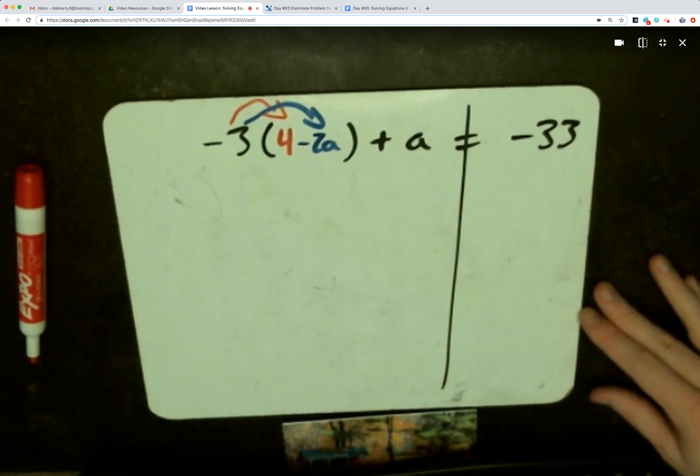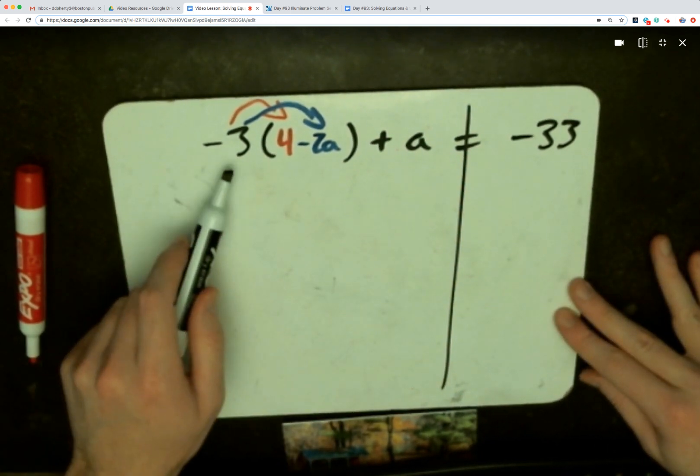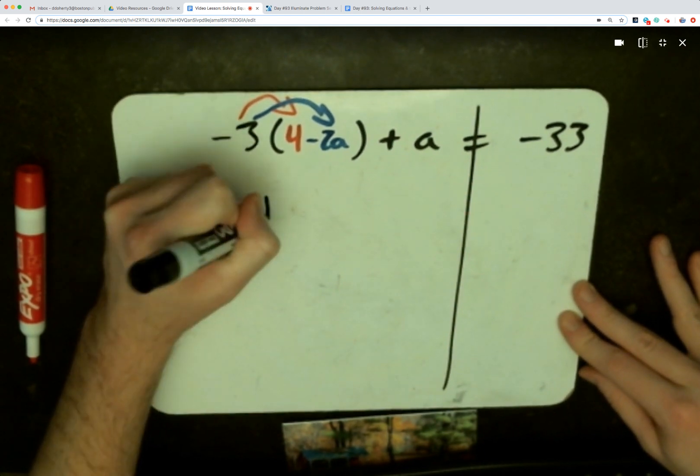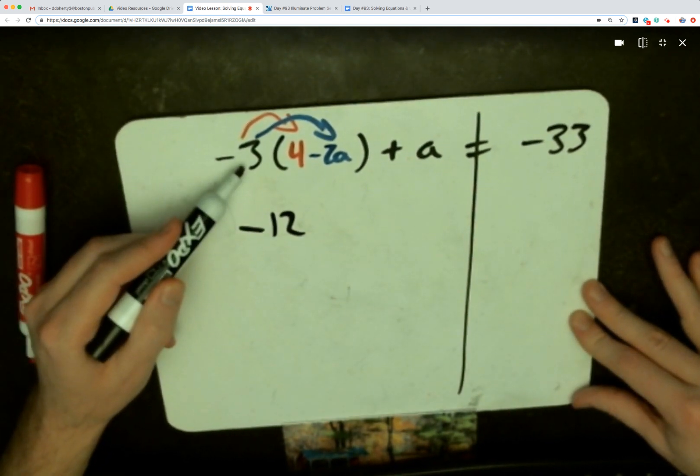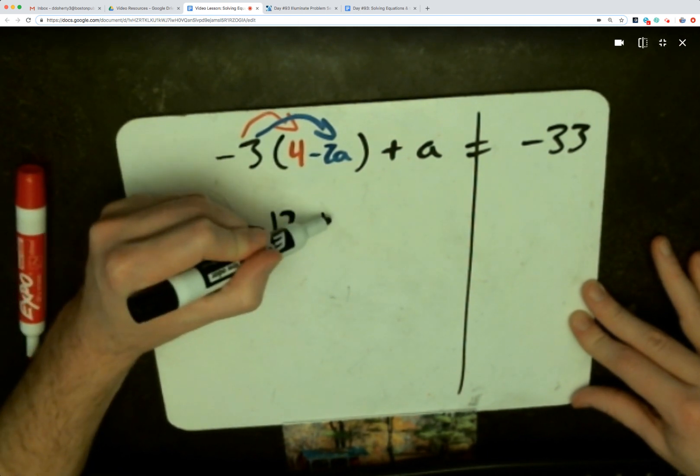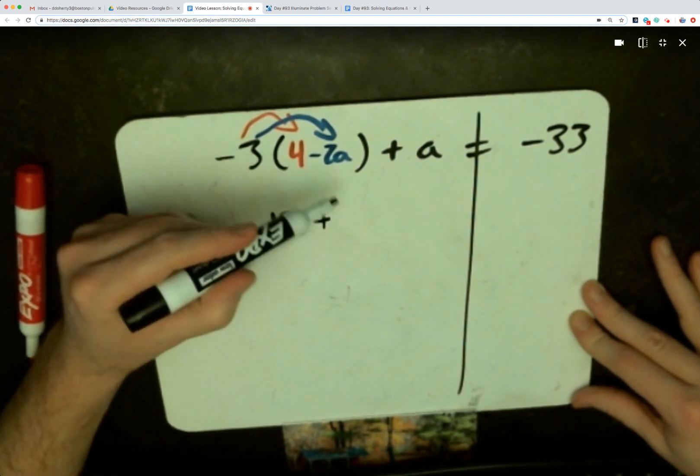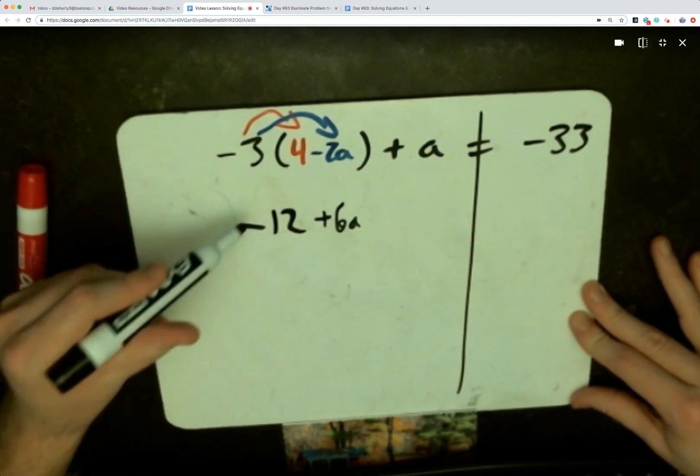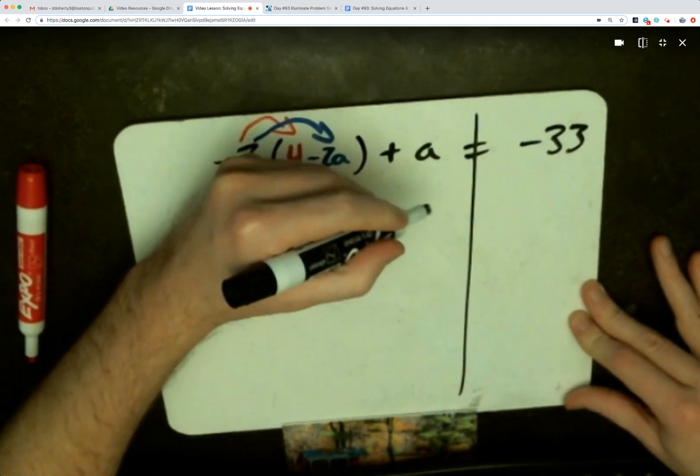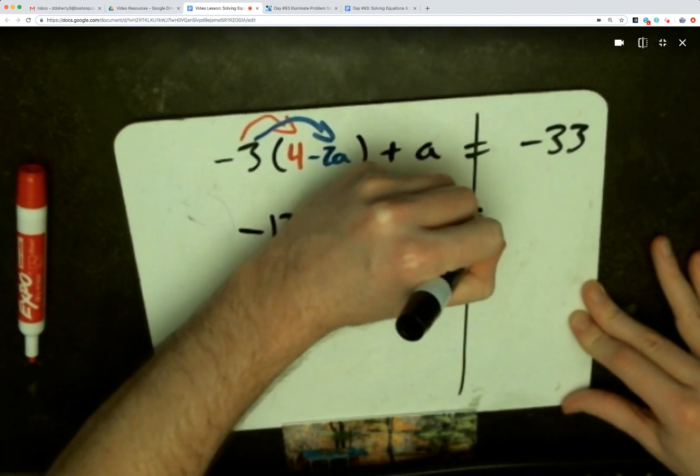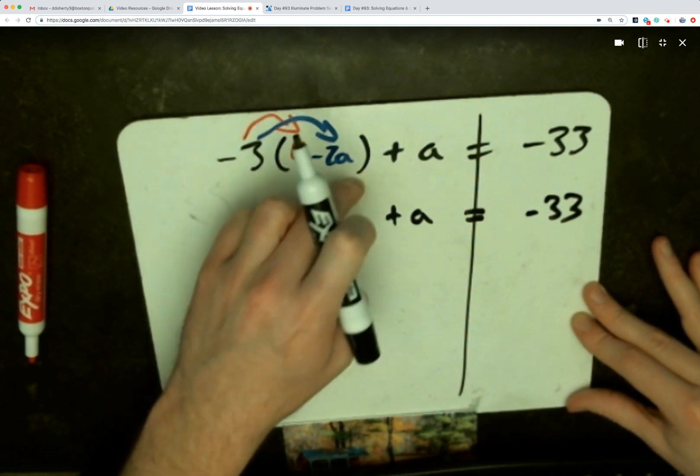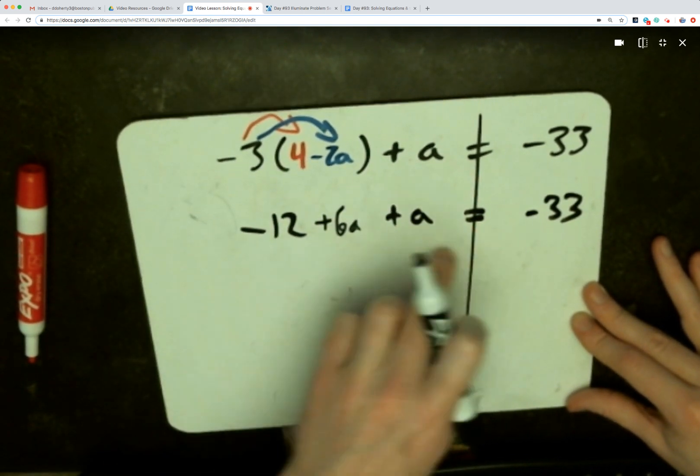Negative 3 times positive 4, and a negative times a positive gives us negative 12. And now this negative 3 is distributed back to a negative 2a. A negative times a negative makes a positive term. 3 times 2 gives us 6, so negative 3 times negative 2a makes positive 6a. The rest of the equation we're just going to bring down.